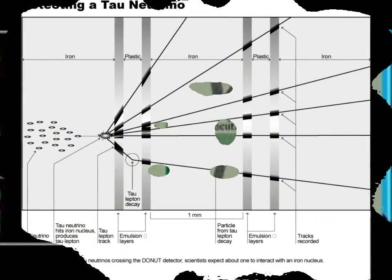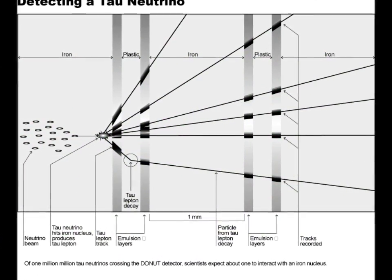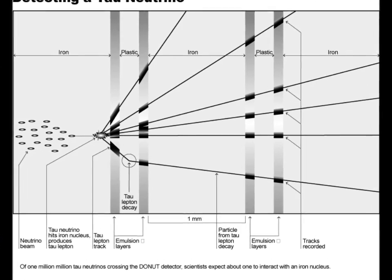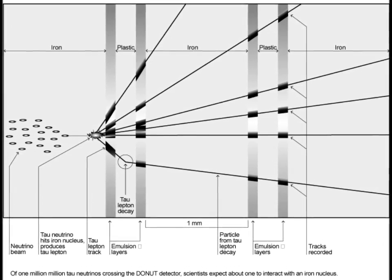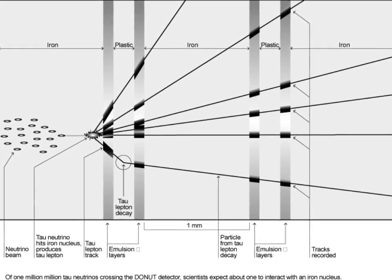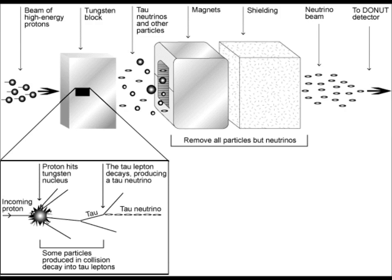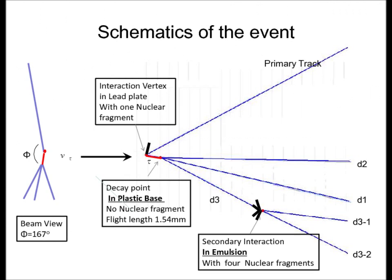If you do your research on the tau neutrino, it's a subatomic elementary particle which has no net electric charge. Together with the tau, it forms the third generation of leptons, hence the name tau neutrino.